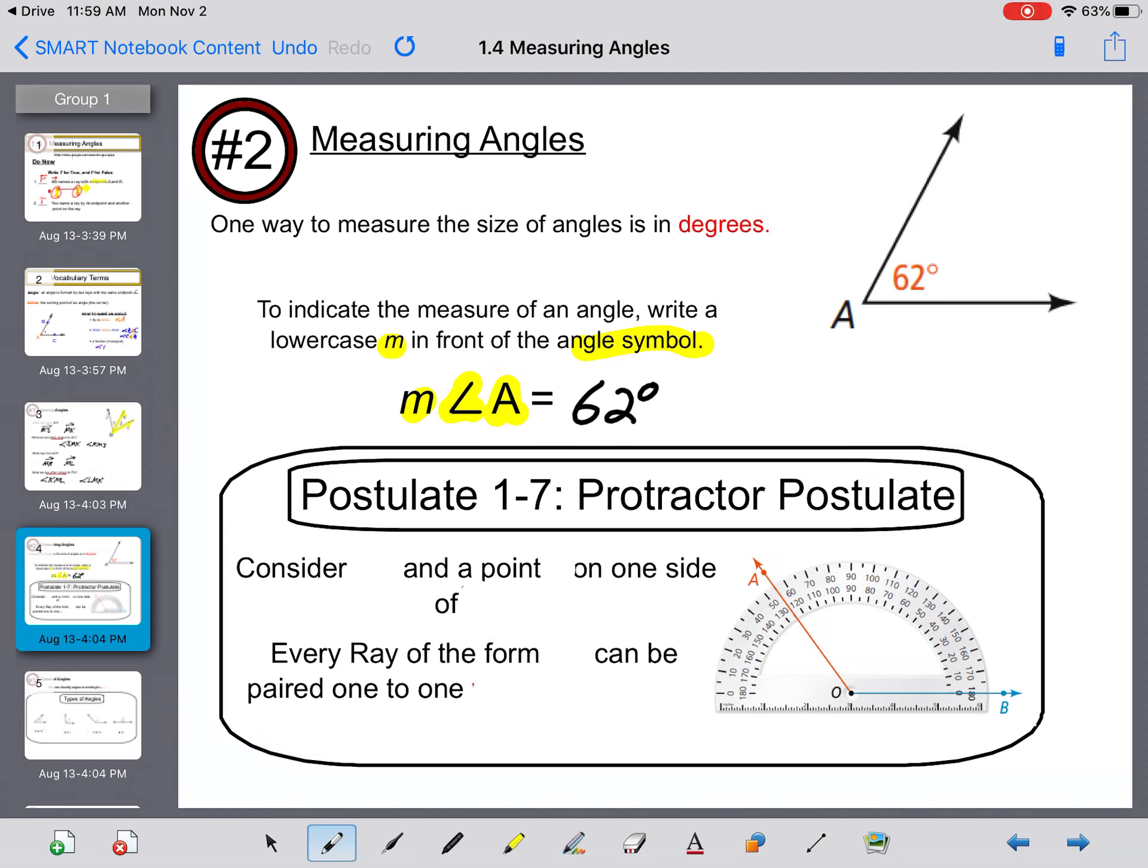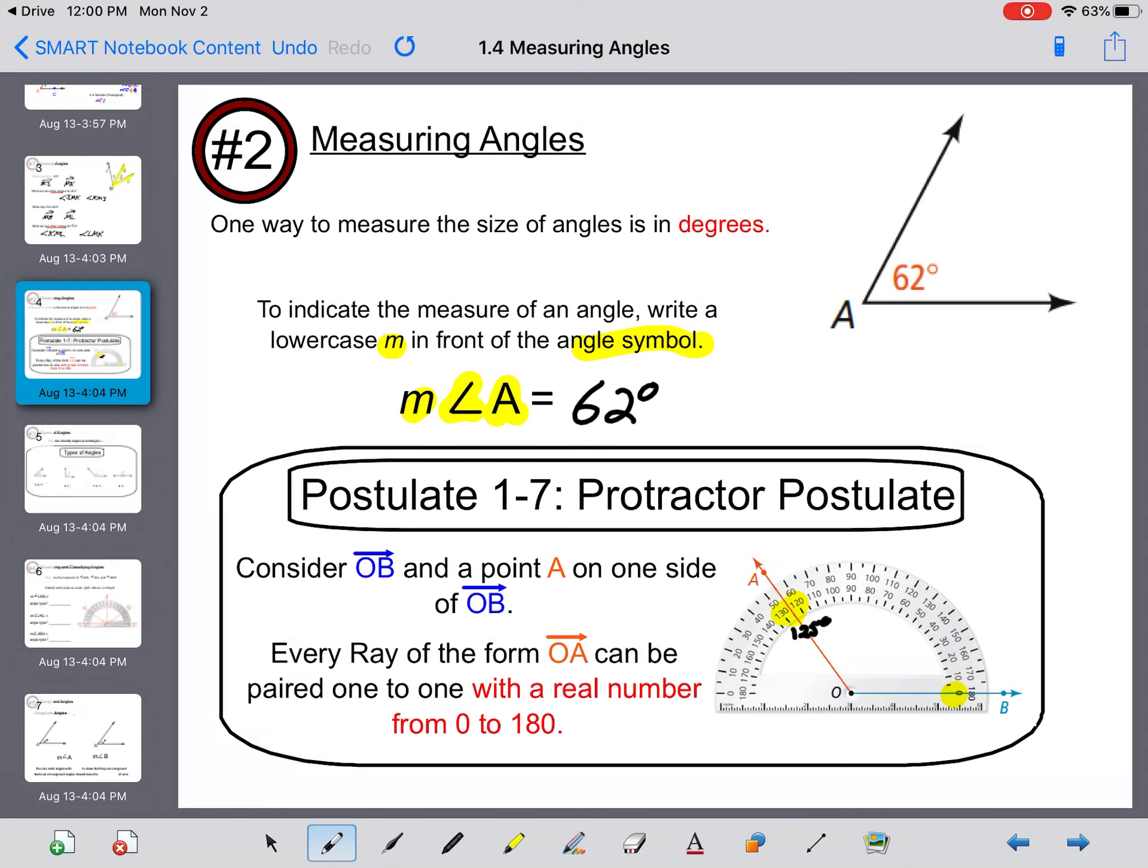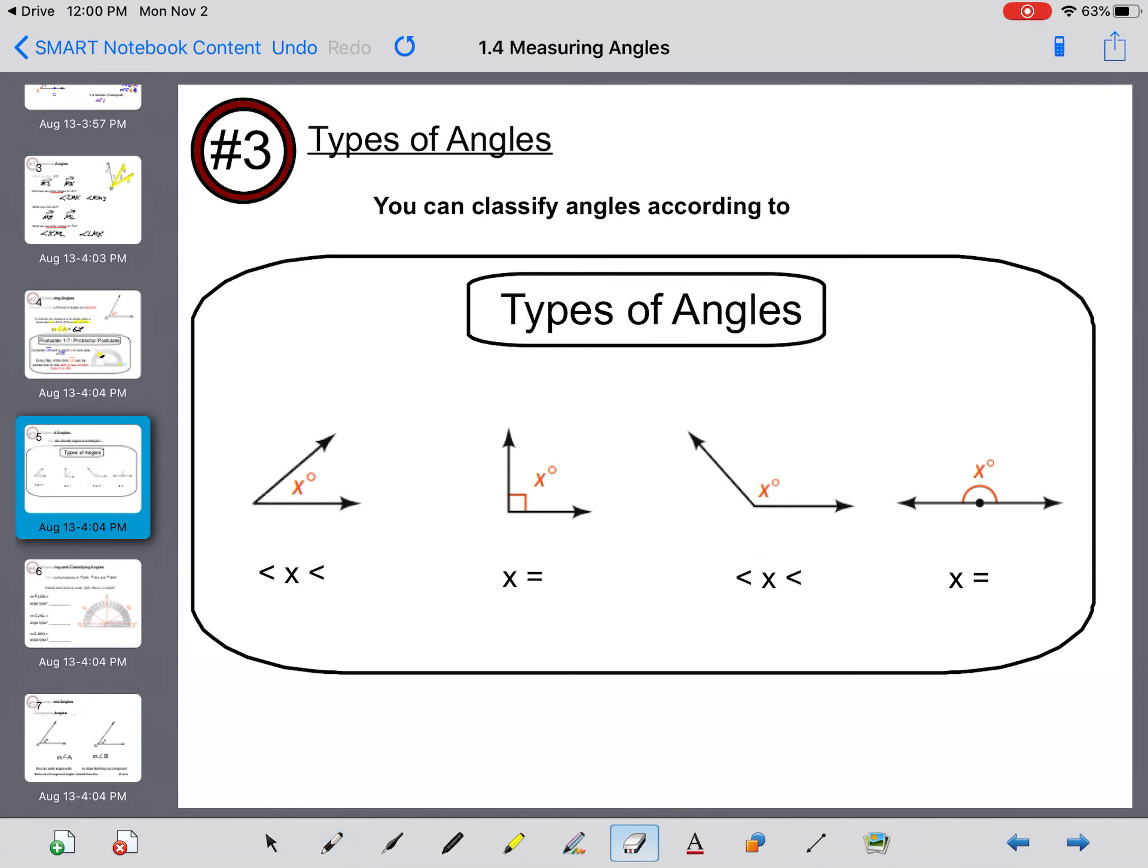More postulates. Postulate 1-7 is the protractor postulate. Consider OB and a point A on one side of OB. Every ray of the form OA can be paired one to one with a real number from 0 to 180 degrees. If you look at this angle, we started at 0 degrees and this angle extends to right here between 130 and 120, so that would be at 125 degrees. We're going to do a lot of practice with protractors.